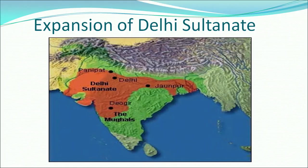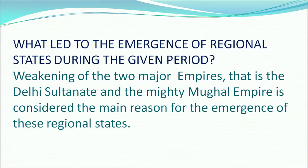With the expansion of the Delhi Sultanate, the regional states that existed at the time became part of the Delhi Sultanate. We will discuss what led to the emergence of regional states during the given period. The main reason was the weakening of two major empires — the Delhi Sultanate and the mighty Mughal Empire — which led to the emergence of regional states.